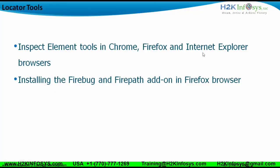The locator tools available intrinsically inside Chrome, Firefox, or IE browsers are called the Inspect Element tool — like spy tools used for spying on objects. In Selenium, objects are nothing but web elements or UI components such as buttons, radio buttons, and push buttons. These are considered web elements in Selenium.